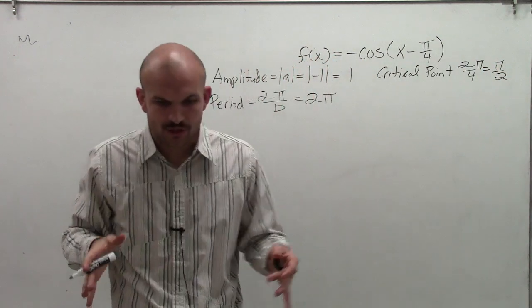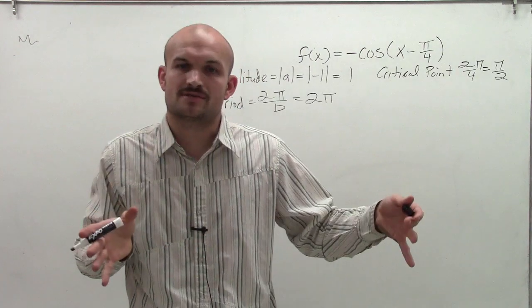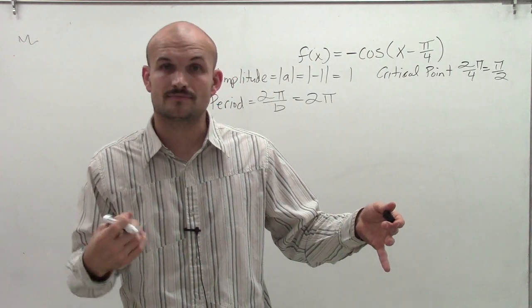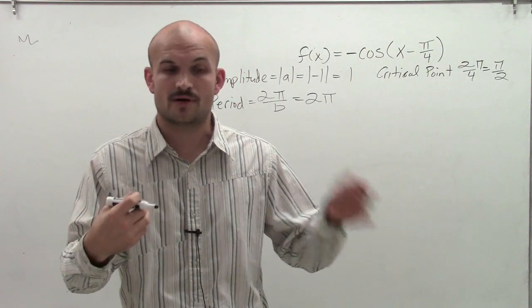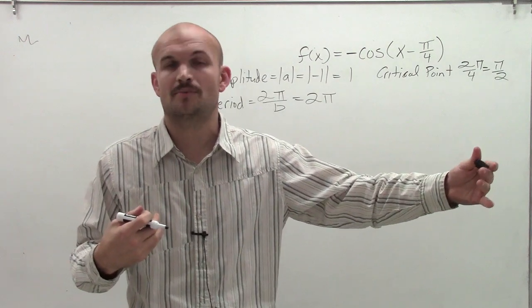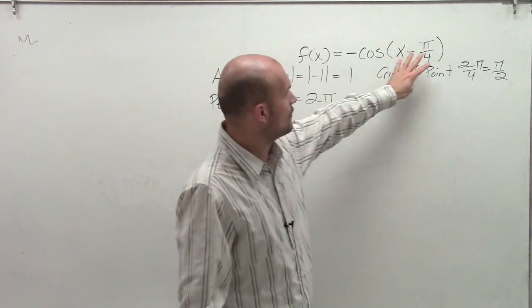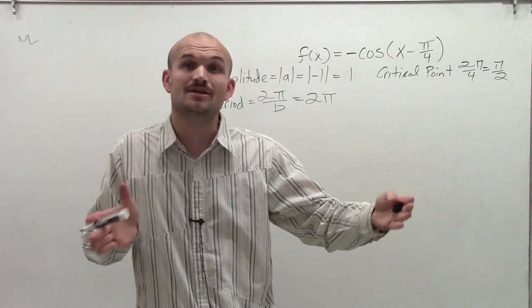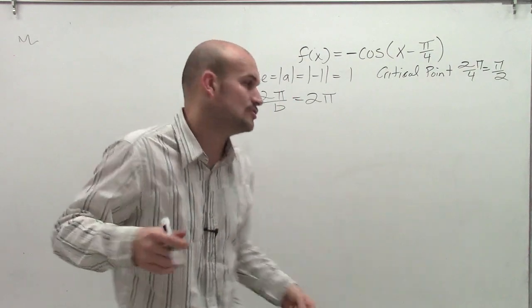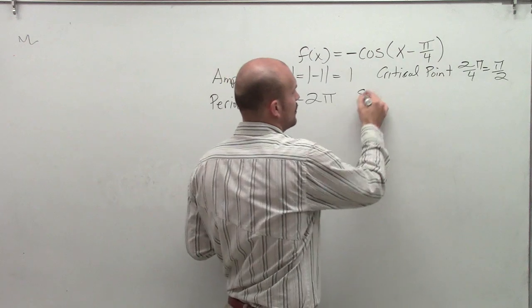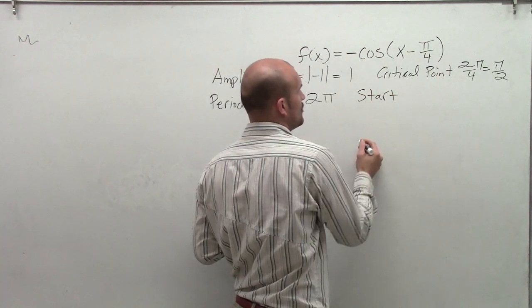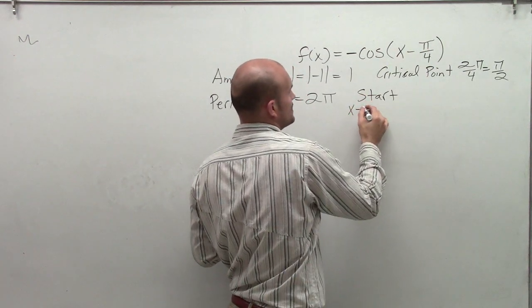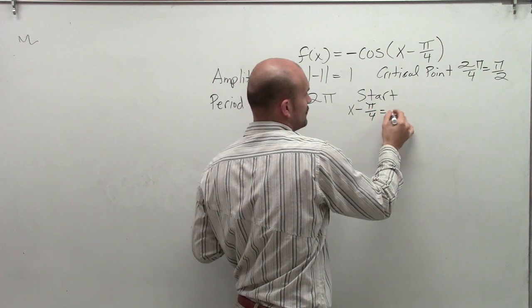Then what we want to do is, usually if you remember our parent graph of cosine, it started at 0, 1, or when x equals 0, and it finished when x equals 2 pi. So since now we have some transformations inside our functions, we want to see is our graph still going to start at 0 and end at 2 pi. So to determine that, what we're going to do is we're going to say our start point is whatever's inside of our function is going to equal 0, and then the end point is going to be whatever's inside of our function equal to 2 pi.